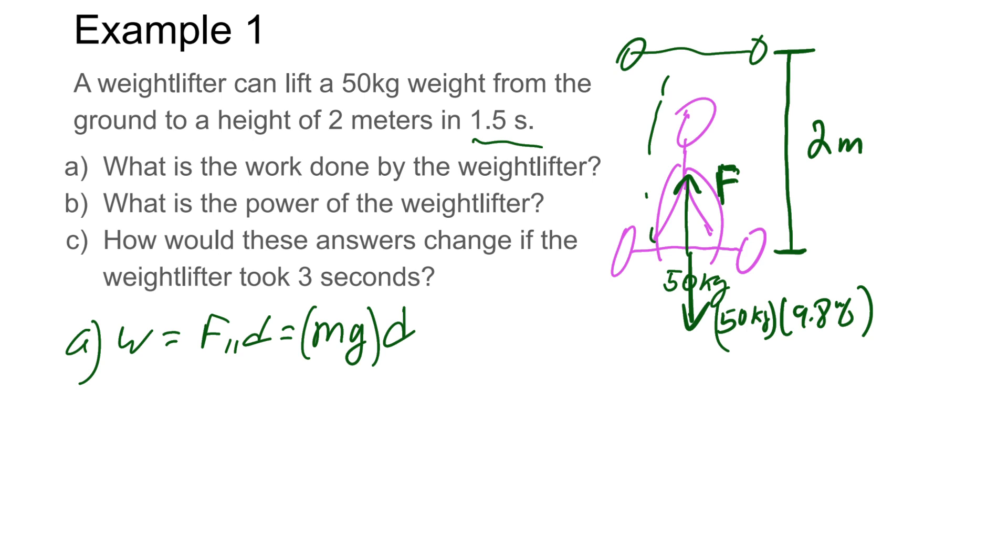I'll just write it as mgd. So let's do this out: 50 kg times 9.8 and then we're lifting it up two meters. Do the math on that and we get, well, 100 times 9.8 is 980 joules. That's the amount of work we need to lift this up.